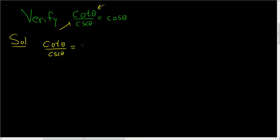The easiest way to do this is to write everything in terms of cosine and sine. So cotangent is cosine theta over sine theta, and cosecant is 1 over sine theta.